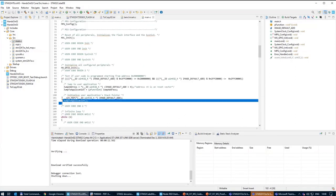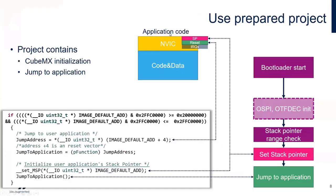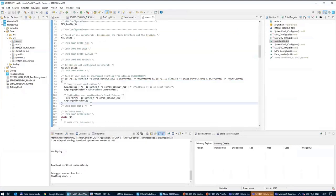Inside the main is a small routine which basically looks inside the application that is at address 0x90000000, checks if the first position contains a value that can be considered as a stack pointer — which is the first thing at the beginning of your application — and checks if it's inside the RAM memory. If yes, it uses the second word, which should be the reset vector, and tries to jump to that reset vector.